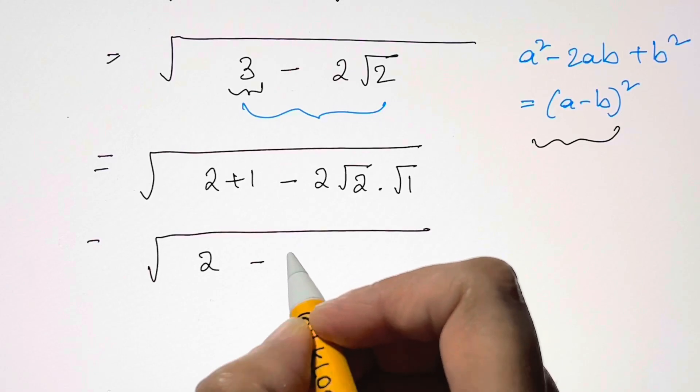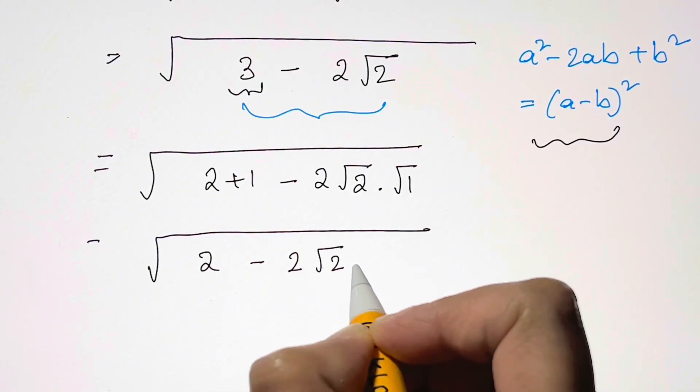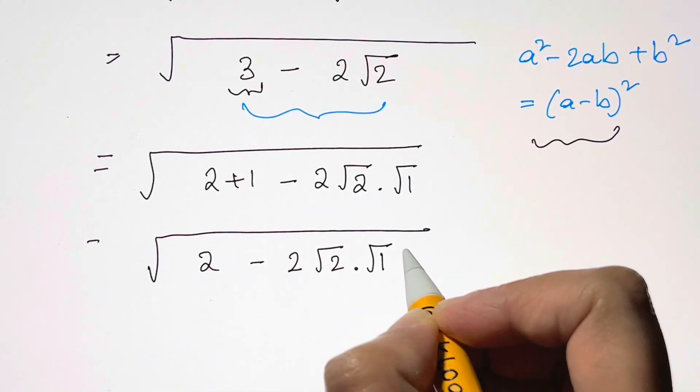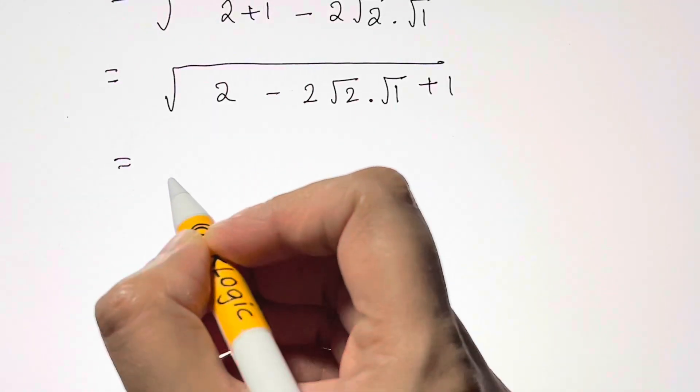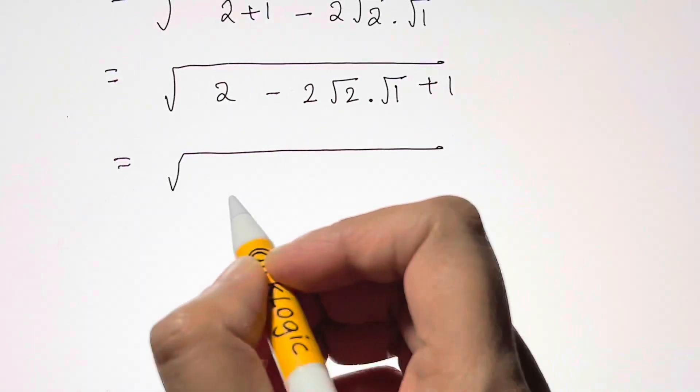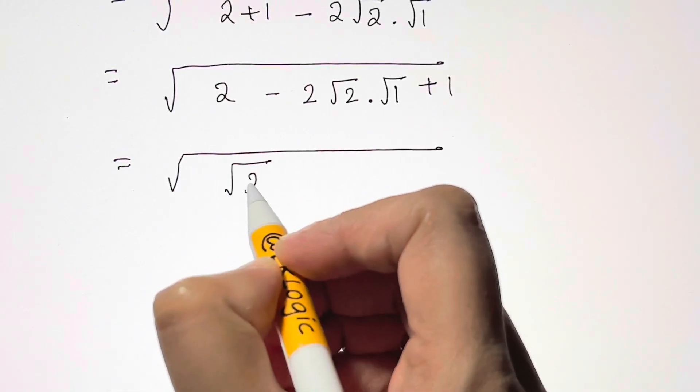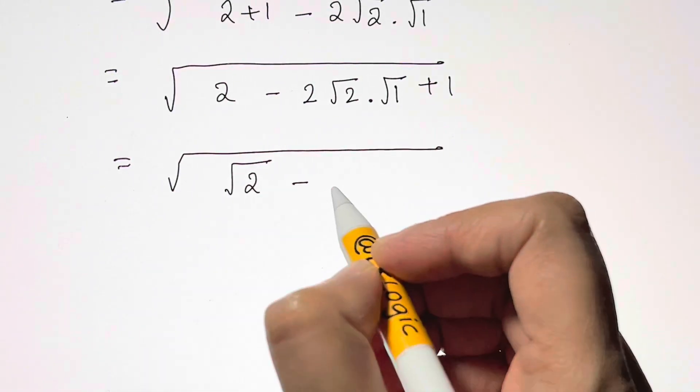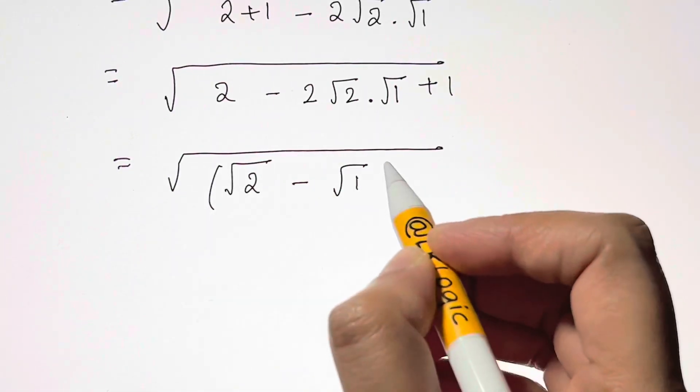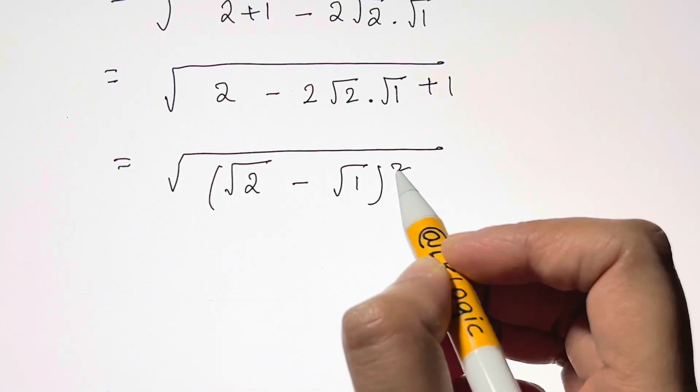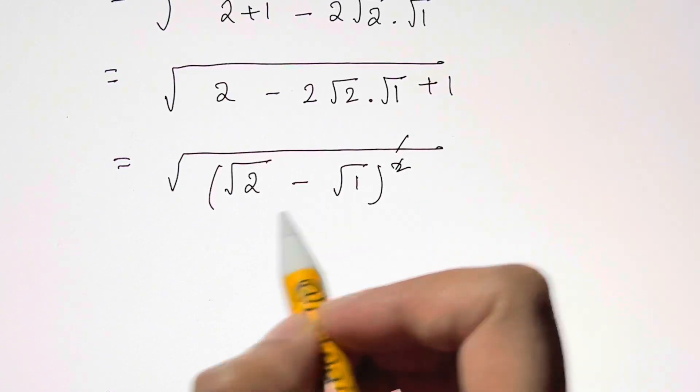So 2 minus 2 root 2 times root 1 plus 1, and that's equal to, as I said, it's in the form of a minus b the whole square. So a is our root 2 minus we have root 1 the whole squared, a minus b the whole squared, and square and root gets cancelled.